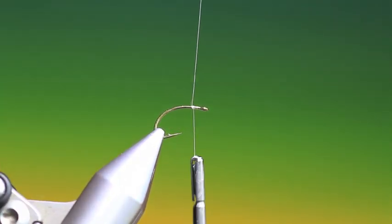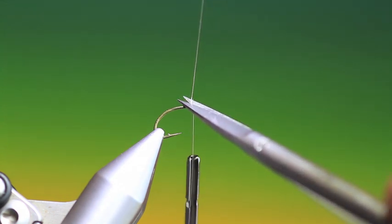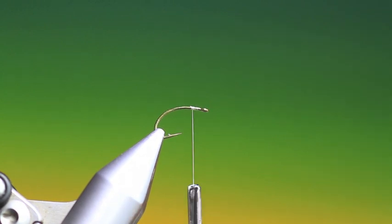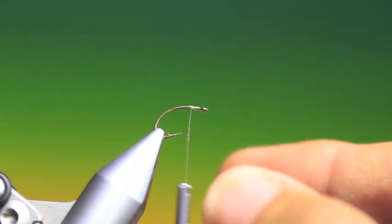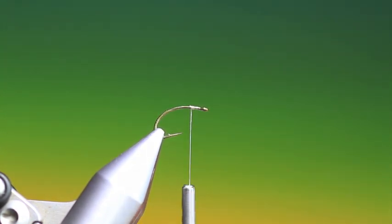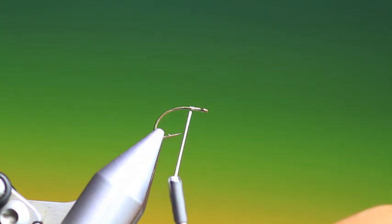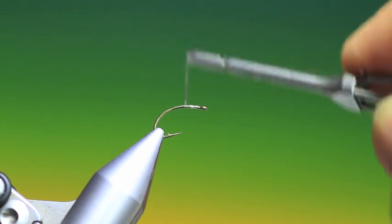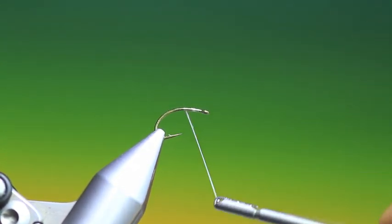You have to use Dyneema or GSP thread. So we'll attach a bit of thread just there and then spin our thread anti-clockwise to open up the fibers like so. See that those are getting flat because the finer the body on this pattern the better it is.